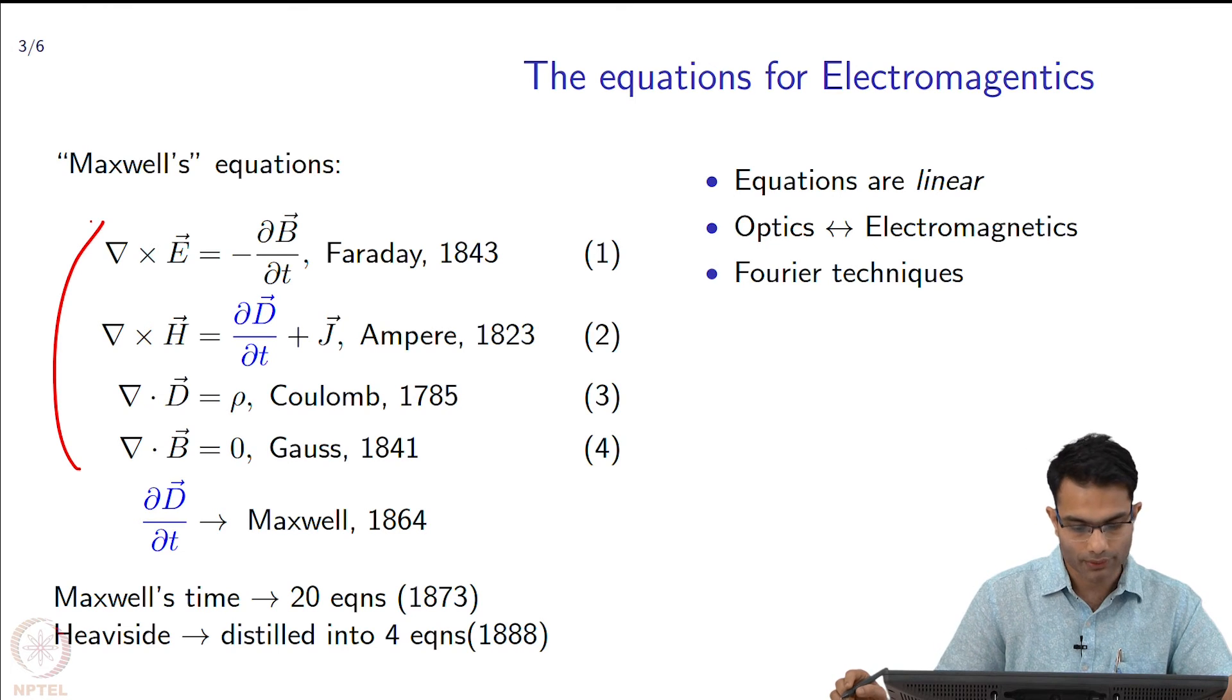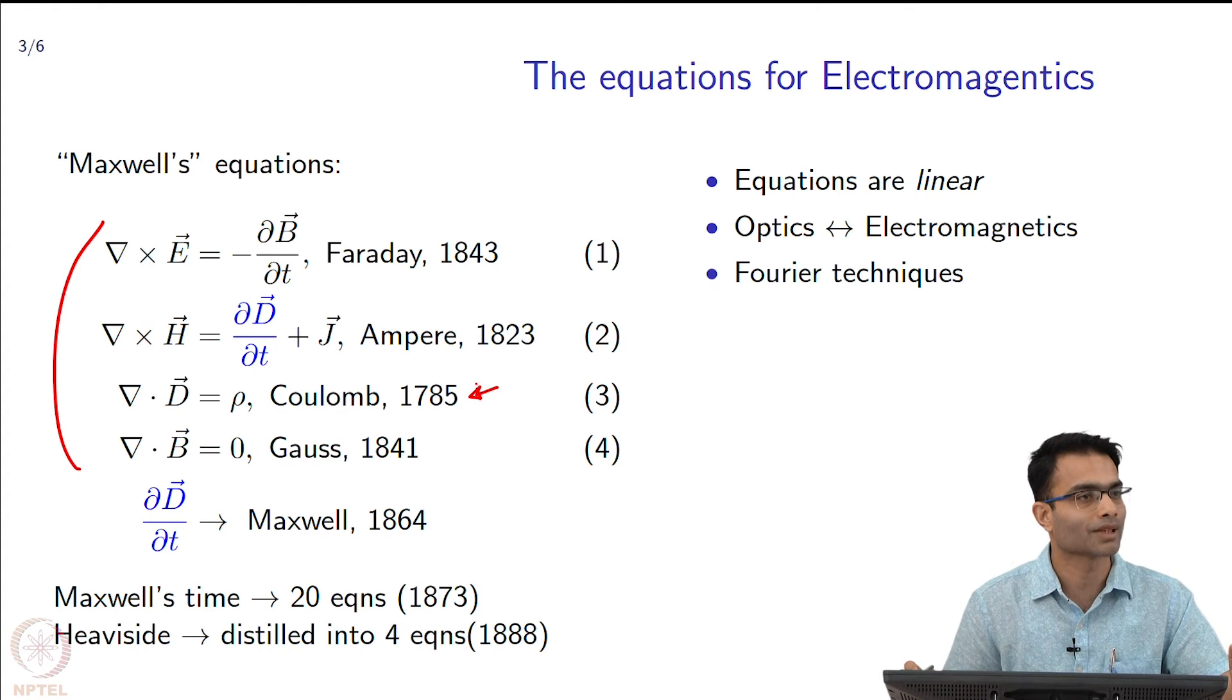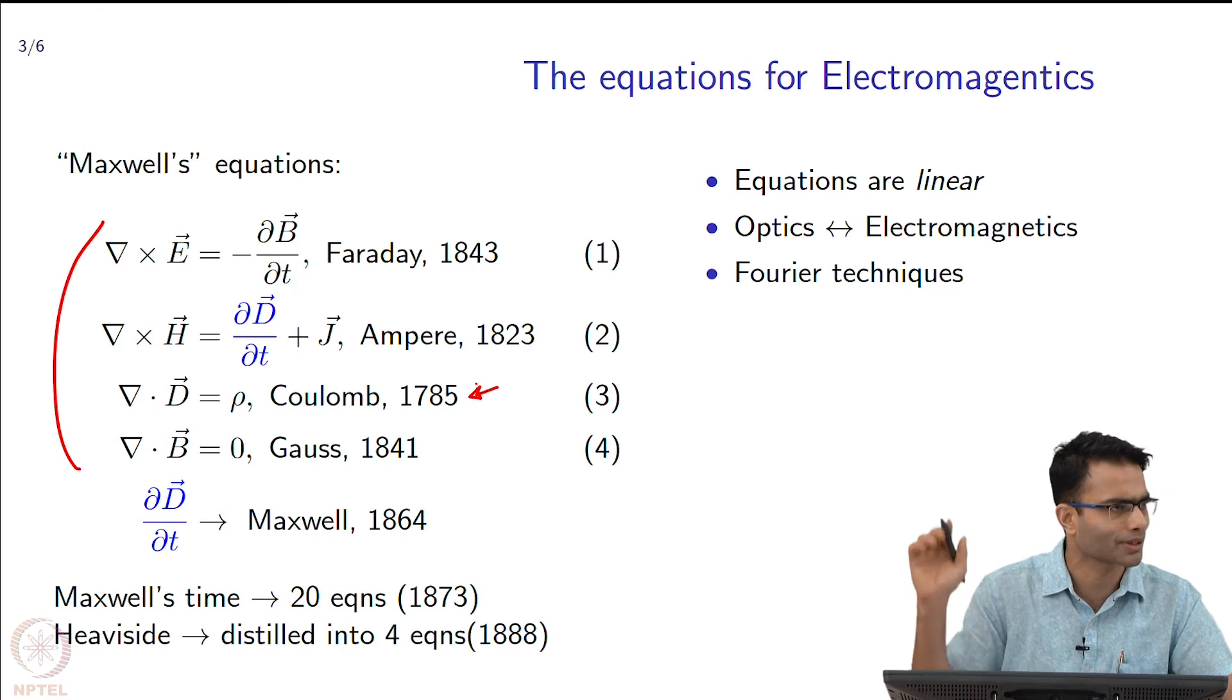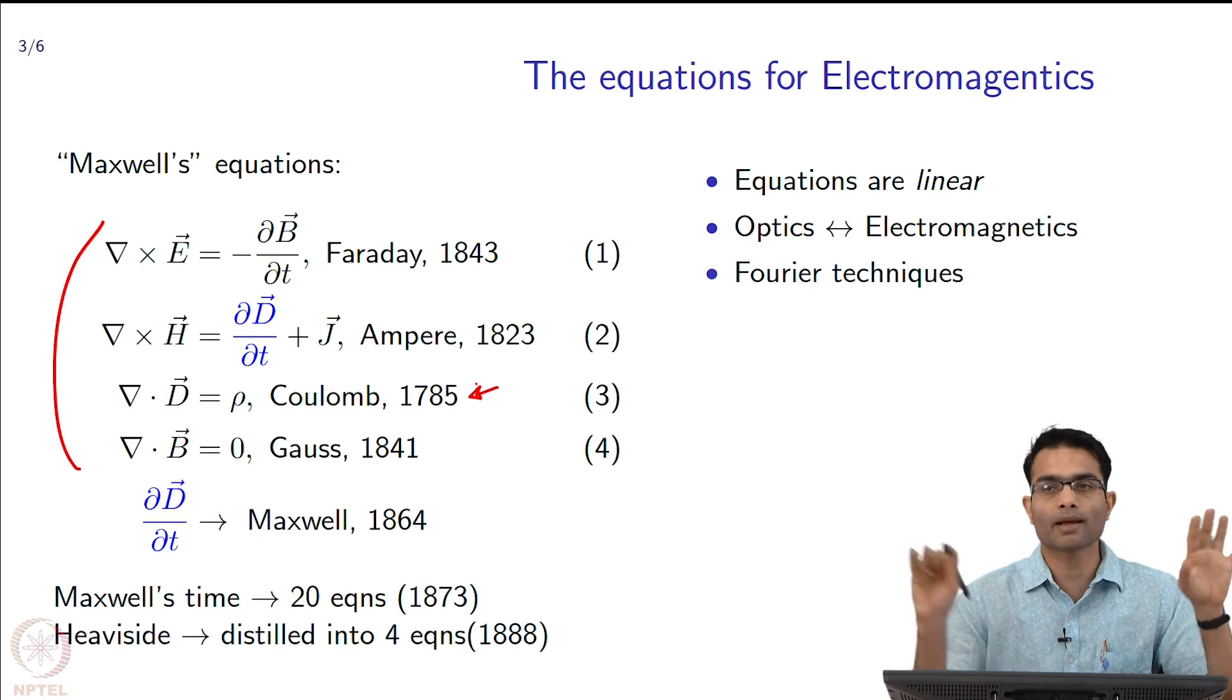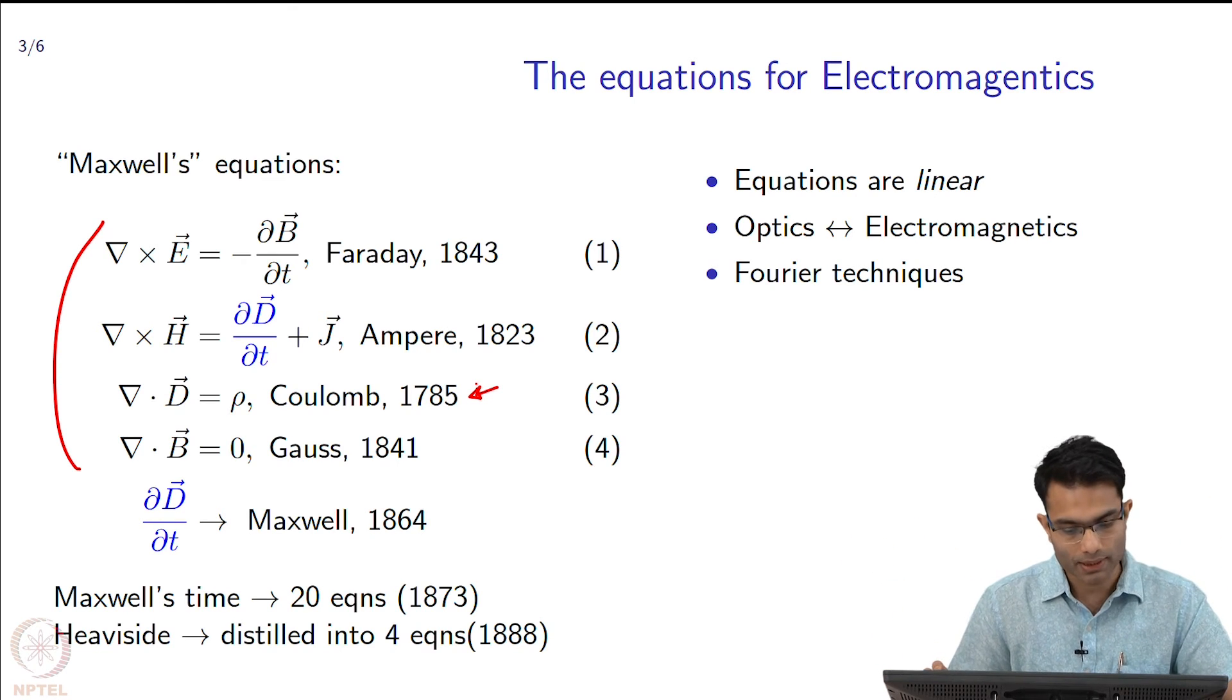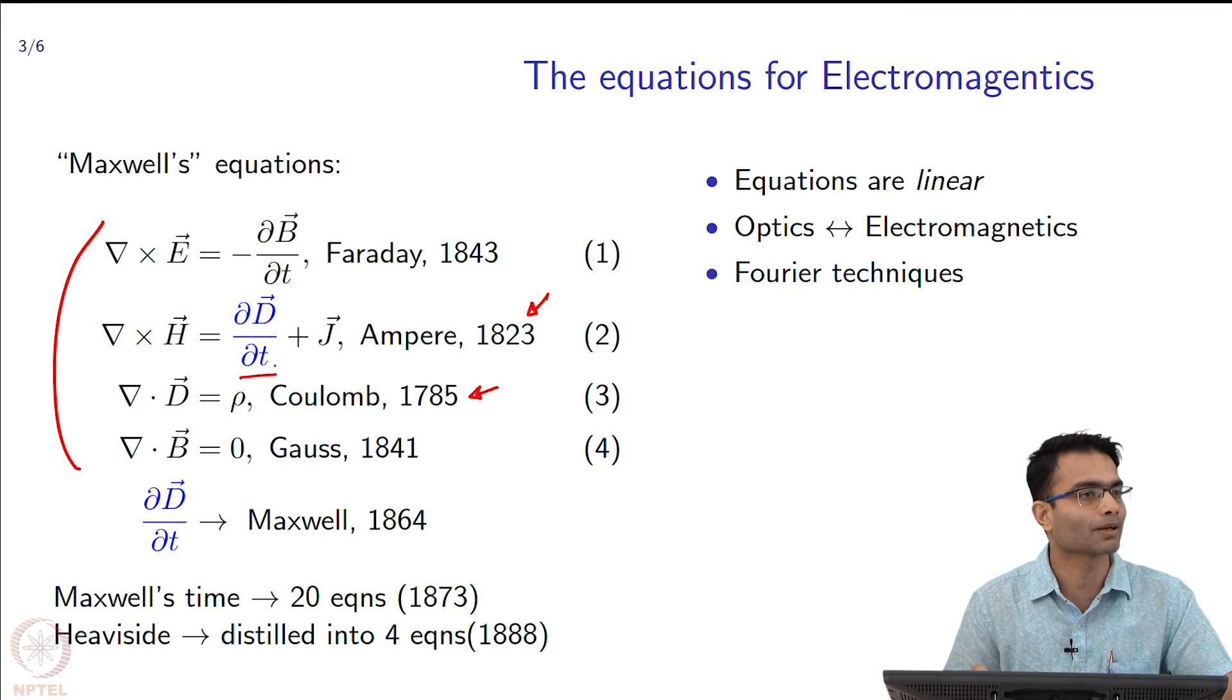The oldest law was actually Coulomb's law which we have all studied in high school. I have a charge, what is the field around it - q by 4π epsilon r square, those kind of things. It comes from Coulomb's law which is 1785. At that time electricity and magnetism were thought to be two different things.